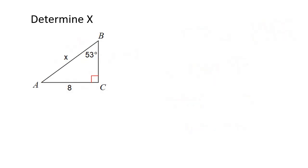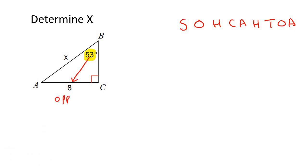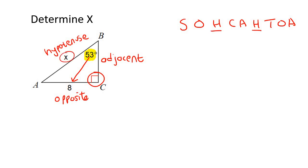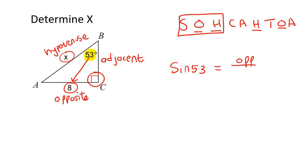The next couple of examples are quite good because x is going to be in the denominator and not the numerator, so it's a little bit different. Start by saying SOH-CAH-TOA, then highlight the angle and label the rest of your triangle. The side opposite the angle is the opposite, the side opposite the 90 is the hypotenuse, and the other side is the adjacent. We're looking for x, which is the hypotenuse, and we have the opposite — so we use sin.